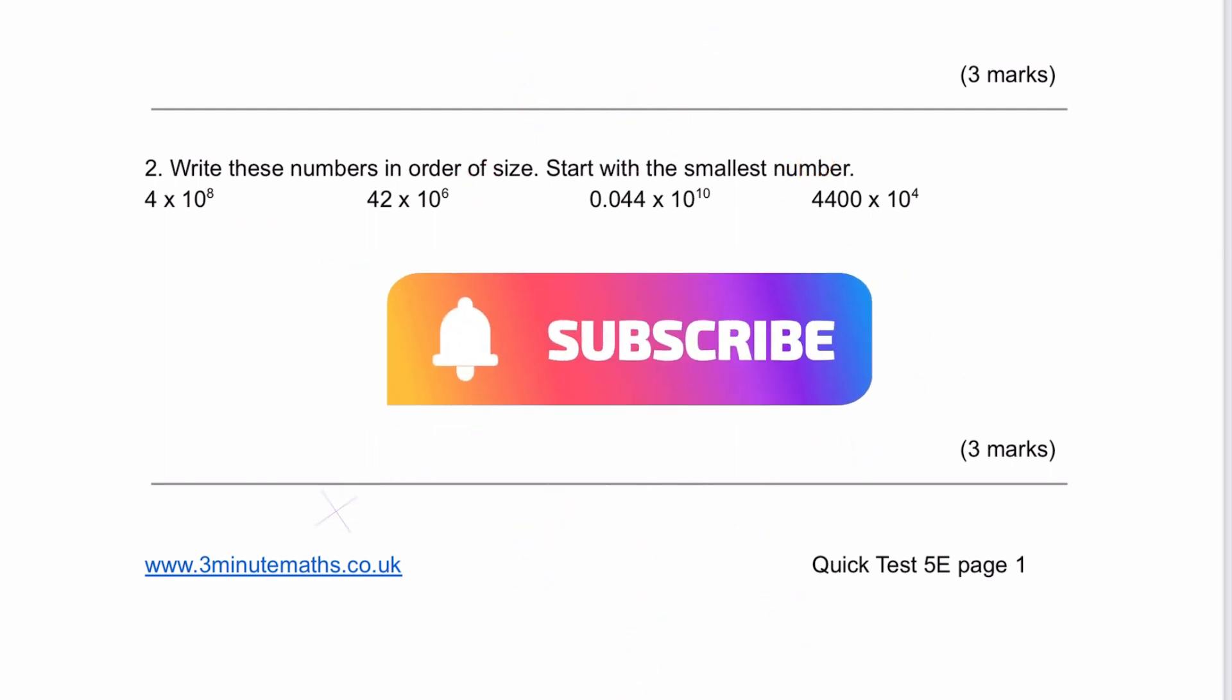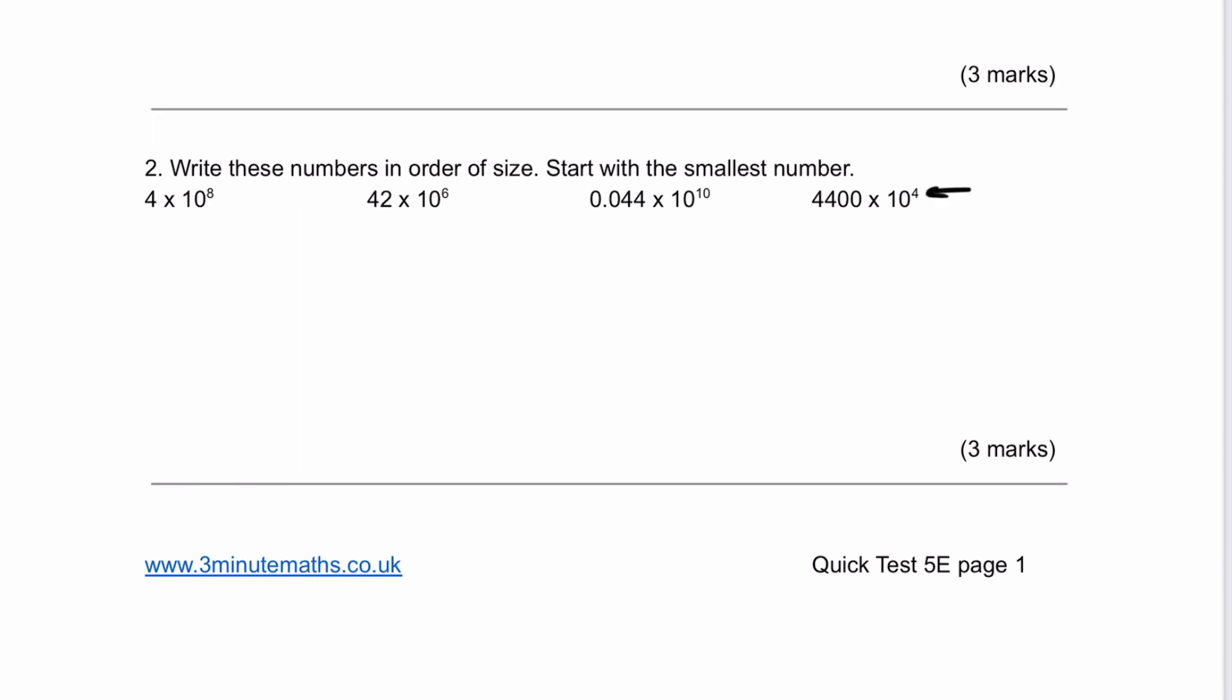Question 2 says write these numbers in order of size, start with the smallest number. This is a tricky one. I would look at the index, the smallest index, which is this one here. I'm going to convert all the numbers to multiplication by 10 to the power of 4. The first one, rather than 4 times 10 to the 8, I've moved my decimal point a further 4 places to get 10 to the 4. The second one I move it a further 2 places to become 10 to the 4. The third one I move it 6 places to become 44,000 times 10 to the 4.